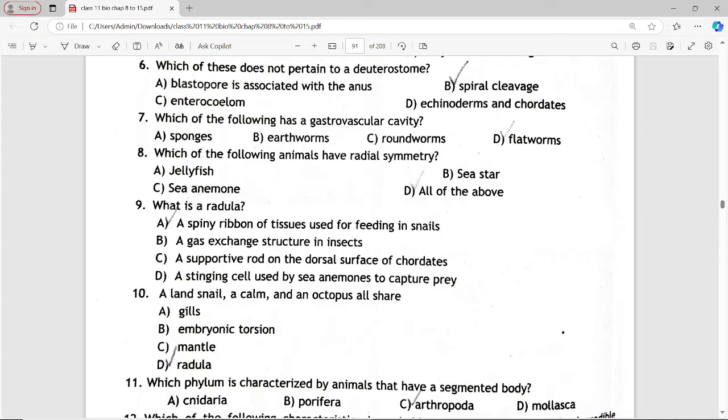Next MCQ is: which of the following has a gastrovascular cavity? Options are sponges, earthworms, roundworms, flatworms. Answer is option D, flatworms.